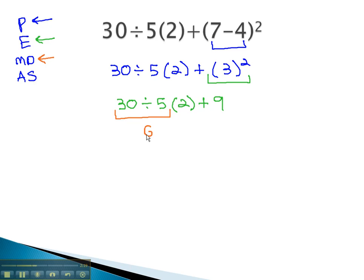30 divided by 5 is 6, and we still have times 2, plus 9. We're still not done multiplying and dividing. We still have more multiplication to do. 6 times 2 is 12, plus 9.